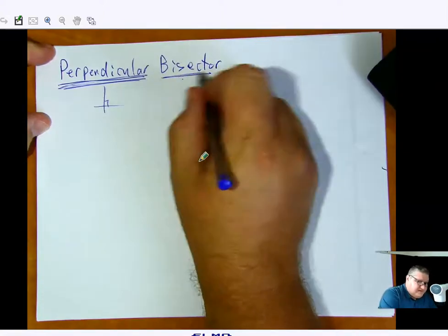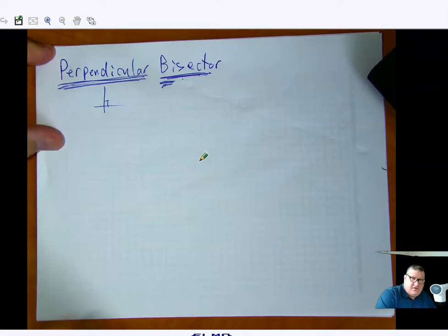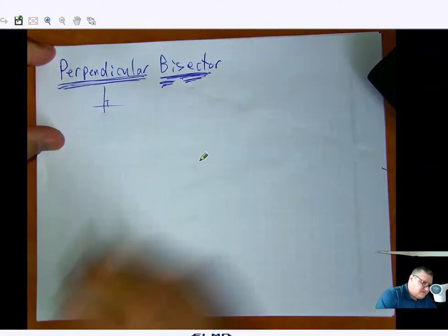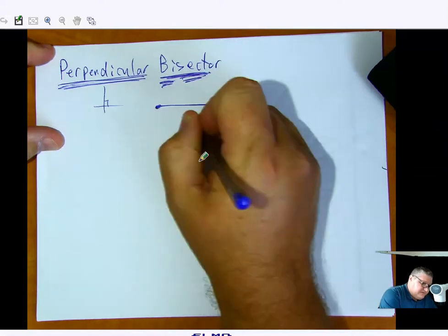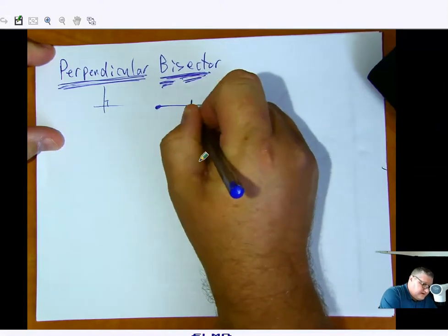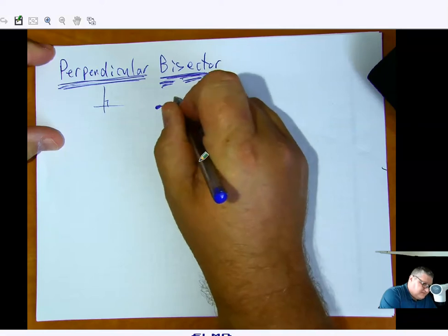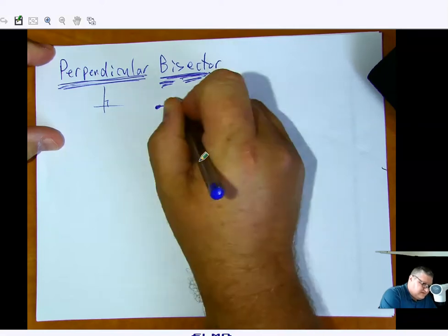And bisect, well, bisect, bi meaning two, sect meaning sections. So what we're going to do, a bisector takes either a segment and it cuts it in half so that this side would be the same length as this side.